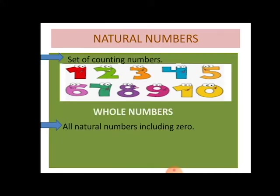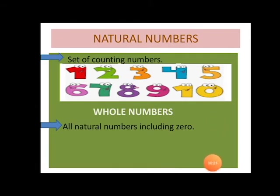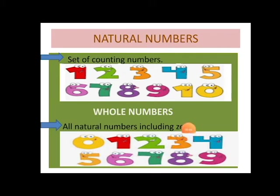Here comes the natural numbers. Children, we know what are natural numbers. Natural numbers are the set of counting numbers and they start from numbers like one, two, three, four, five and go on. So all the counting numbers are termed as natural numbers.